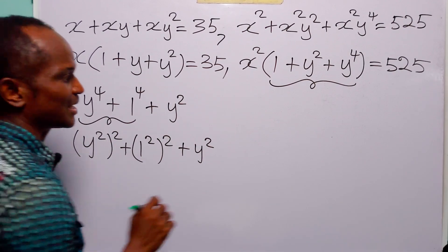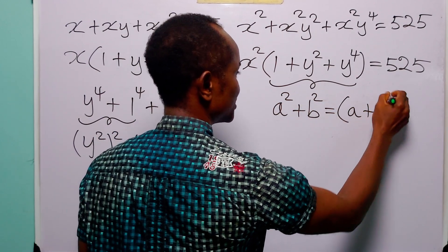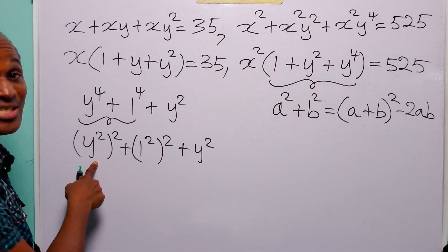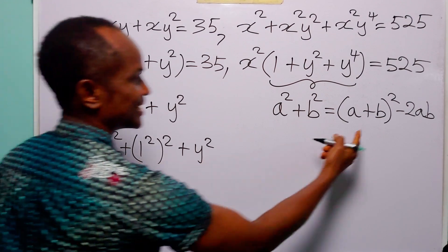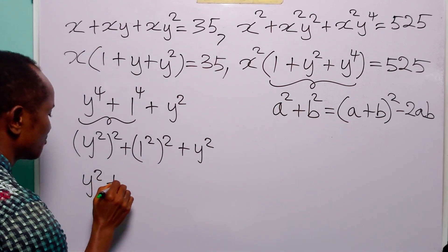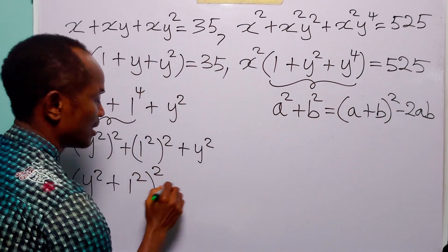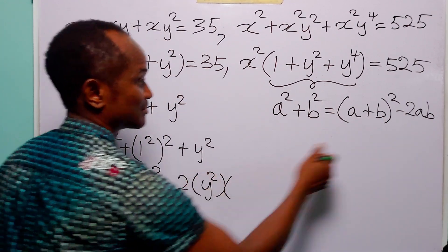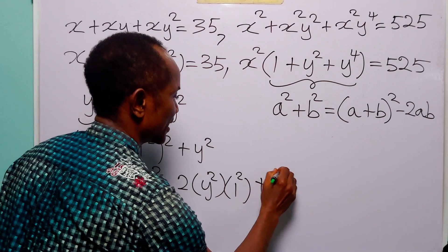Now, remember that a squared plus b squared is equal to a plus b squared minus 2ab. In this case, a is y squared and b is 1 squared. So what we are going to do is write this in that form: we have y squared plus 1 squared, both squared, minus 2 times y squared times 1 squared. And then of course we still have plus y squared.